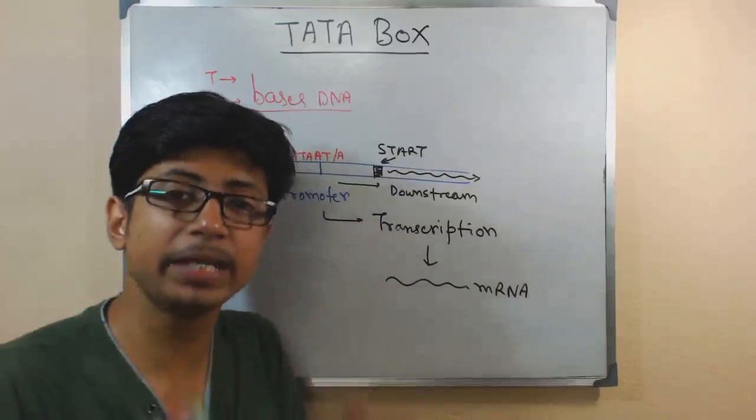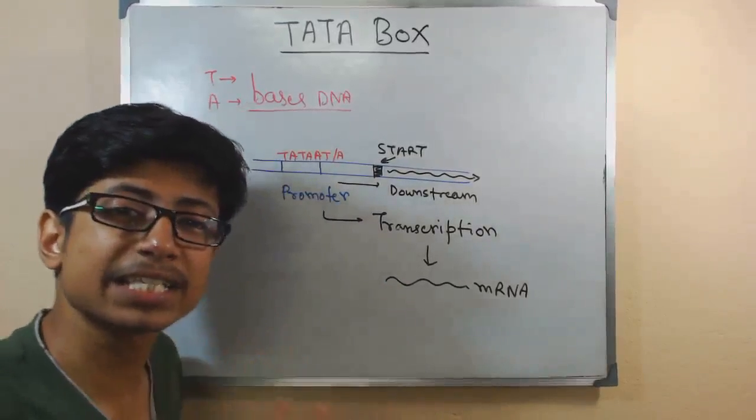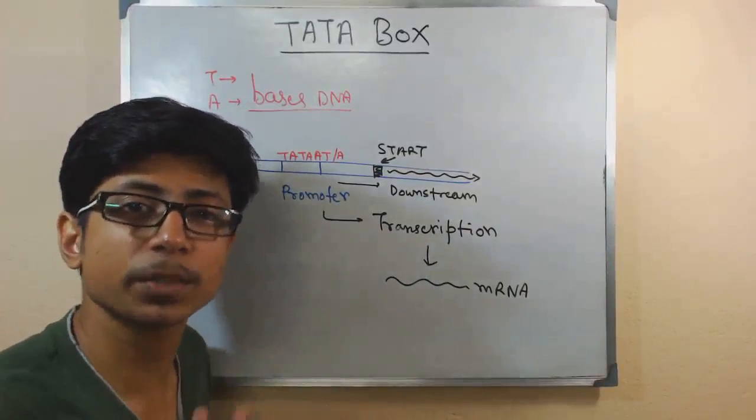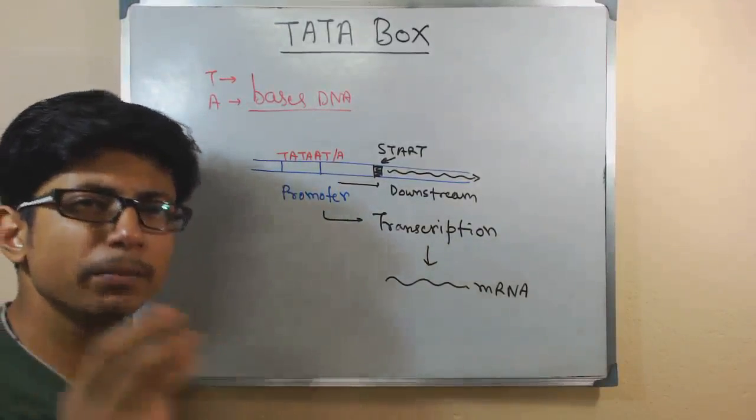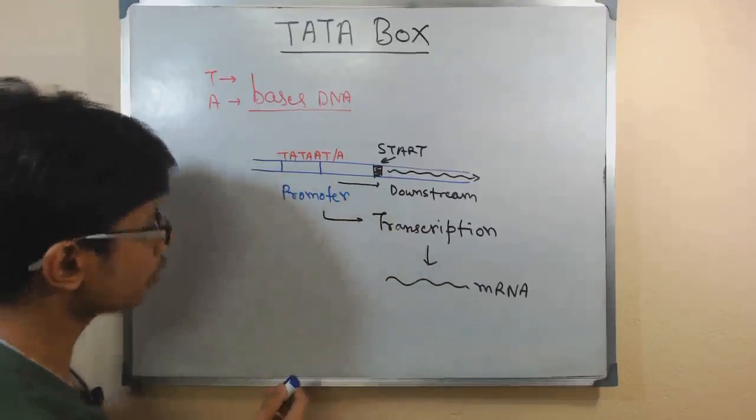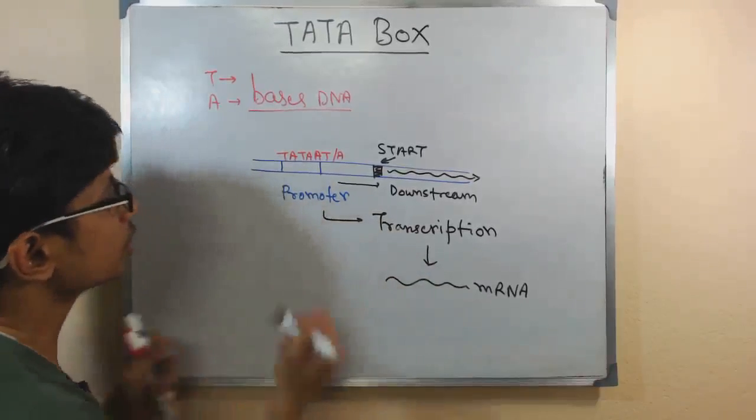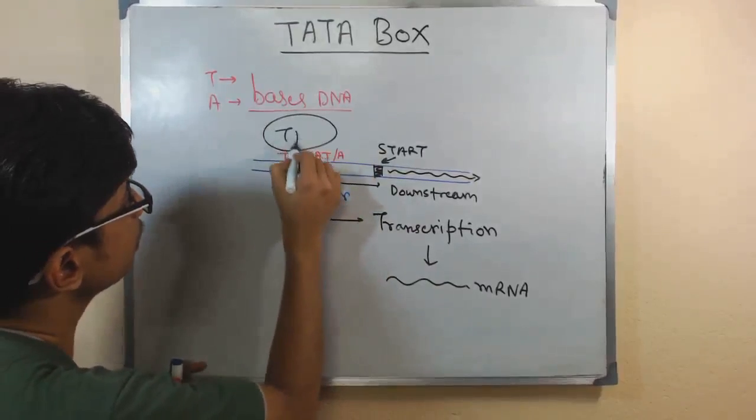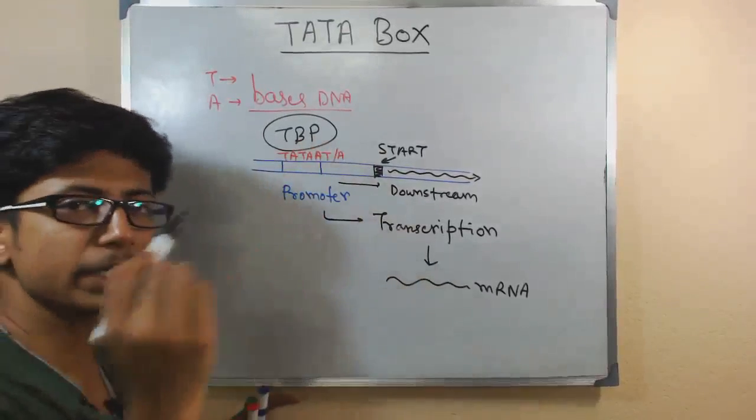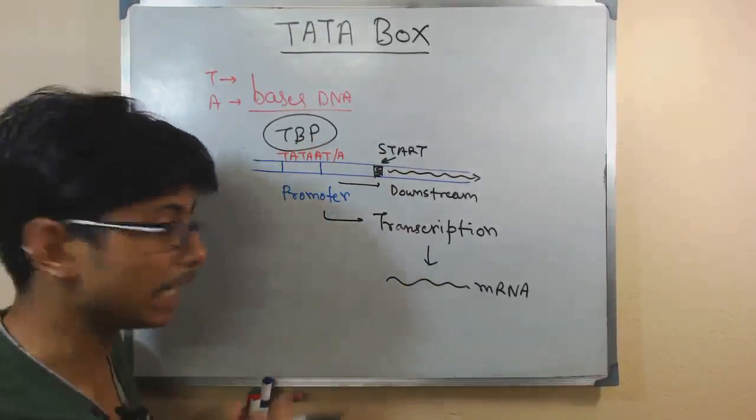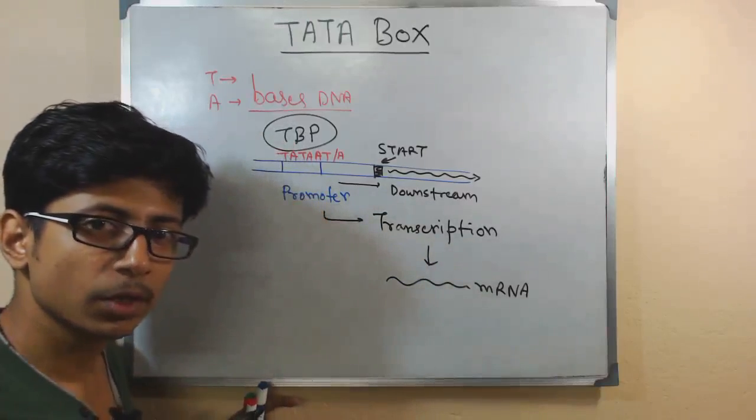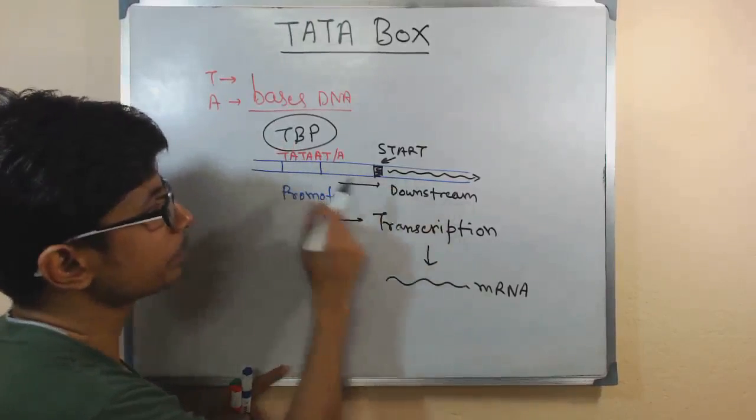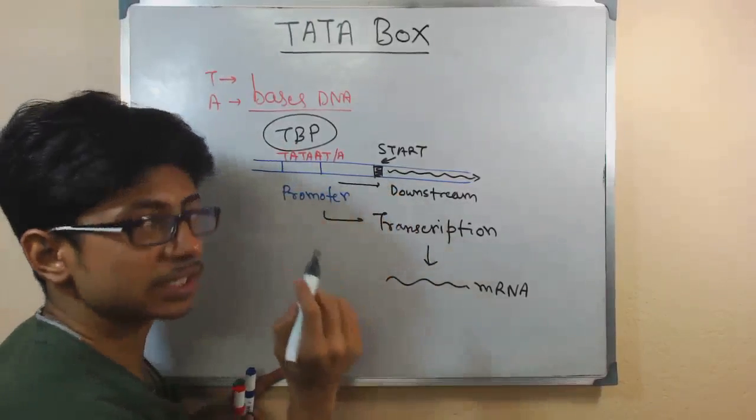And it has a very important task for attaching with the polymerase to start the transcription process. Now this TATA definitely has another very much interacting protein that is called TBP, or TATA binding protein. TBP, TATA binding protein or TATA box binding protein. Now this TATA box binding protein can interact with this TATA box which is placed upstream of the actual start site.